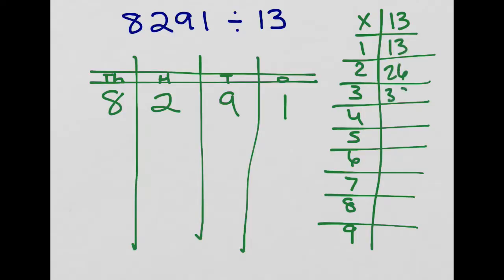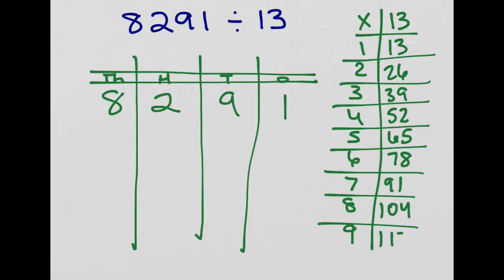If building the 13s table is hard for you, take the time to write it out like an addition problem and keep adding 13 to make sure your table of multiples is correct — if you have an error, you will have mistakes in your division. So: 13, 26, 39, 52, 65, 78, 91, 104, 117. Now that I have my table of multiples built, I can start dividing.